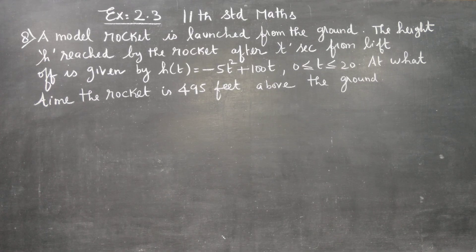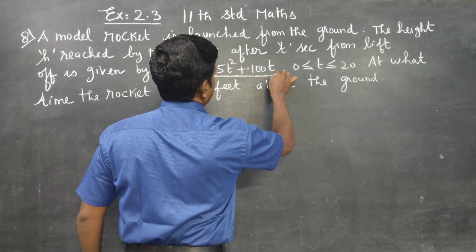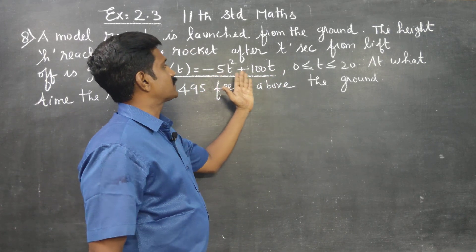A model rocket is launched from the ground. The equation of motion of the rocket is given by h(t) = -5t² + 100t, where t is the time.